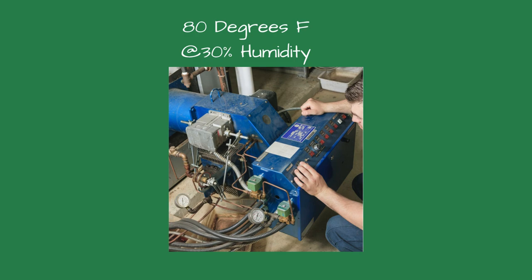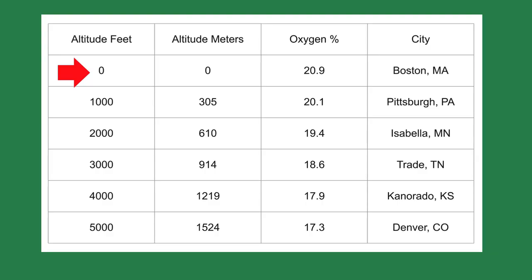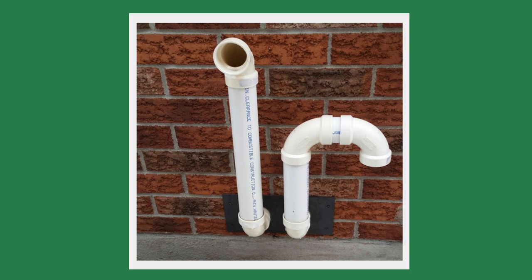Problems occur when the temperature or humidity changes. If you're in Boston, Massachusetts, you're at sea level and the oxygen percentage in dry air is about 20.9 percent. If you're in Denver, Colorado, the oxygen percentage is 17.3 percent — you would need 20 percent more air in Denver than you would in Boston.